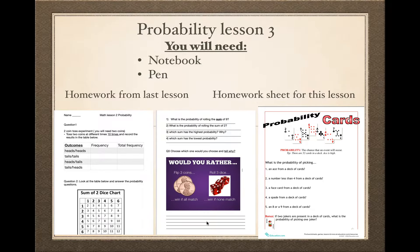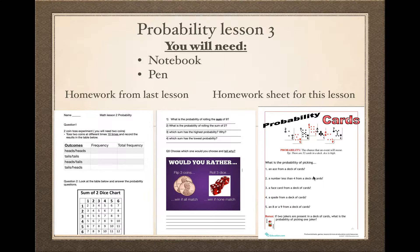For this lesson you will need a notebook and a pen, and you will need the sheets from last lesson — the homework sheets. Hopefully you did the two coin toss experiment to see which would come up the most. There are four possibilities: heads-heads, tails-tails, heads-tails, and tails-heads. You also needed the sum of two dice chart and the 'would you rather' sheet. You also need the probability cards sheet for this lesson. If you don't have it, you can copy questions from your notebook. Just pause and get ready.